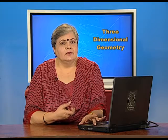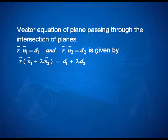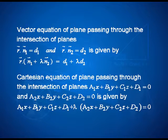Lambda is any real number. As you vary lambda, you come across the entire family of planes passing through the intersection. In Cartesian, given two planes a1x plus b1y plus c1z plus d1 equal to 0 and a2x plus b2y plus c2z plus d2 equal to 0, the family of planes passing through their intersection is given as (a1x plus b1y plus c1z plus d1) plus lambda times (a2x plus b2y plus c2z plus d2) equal to 0.